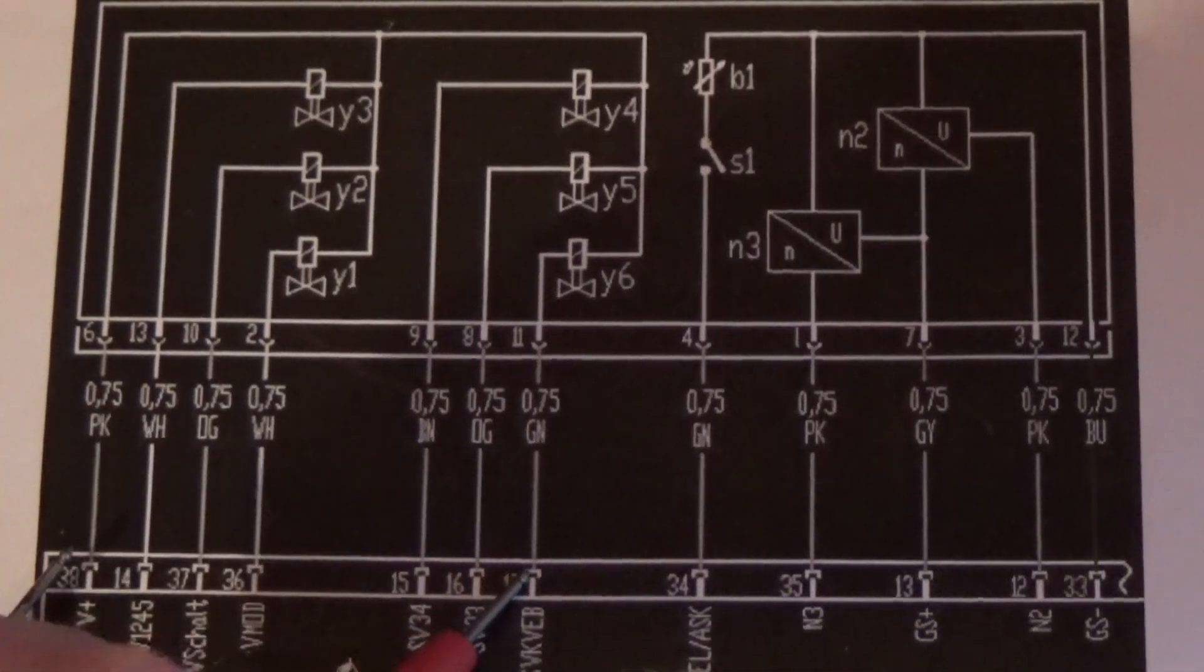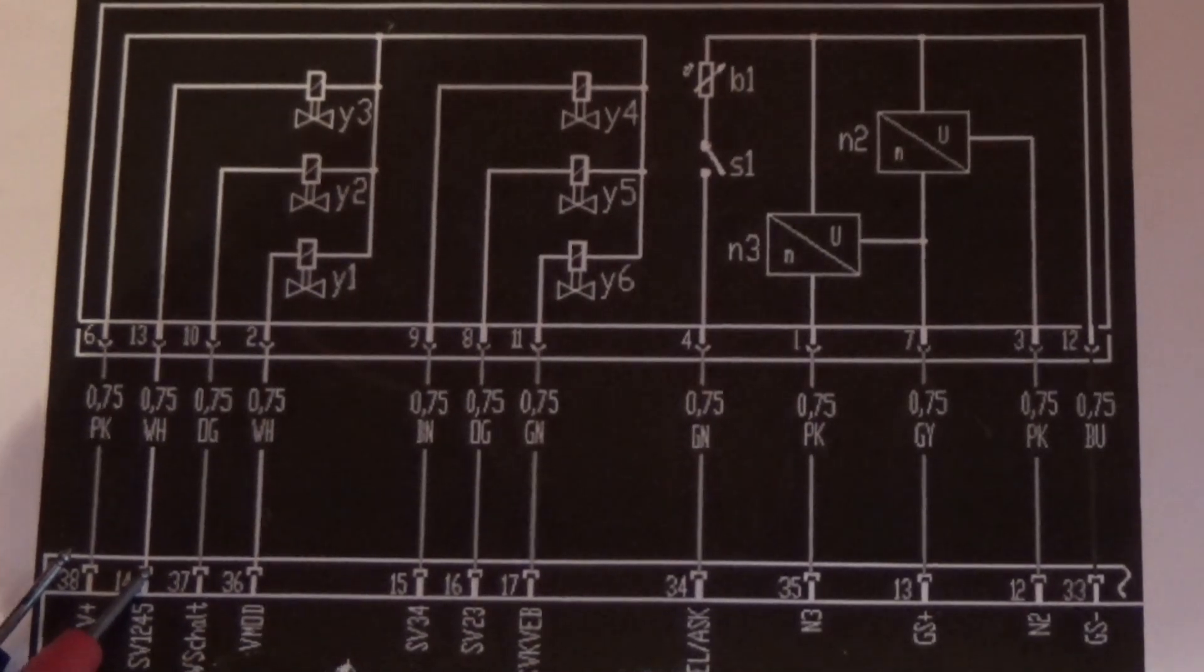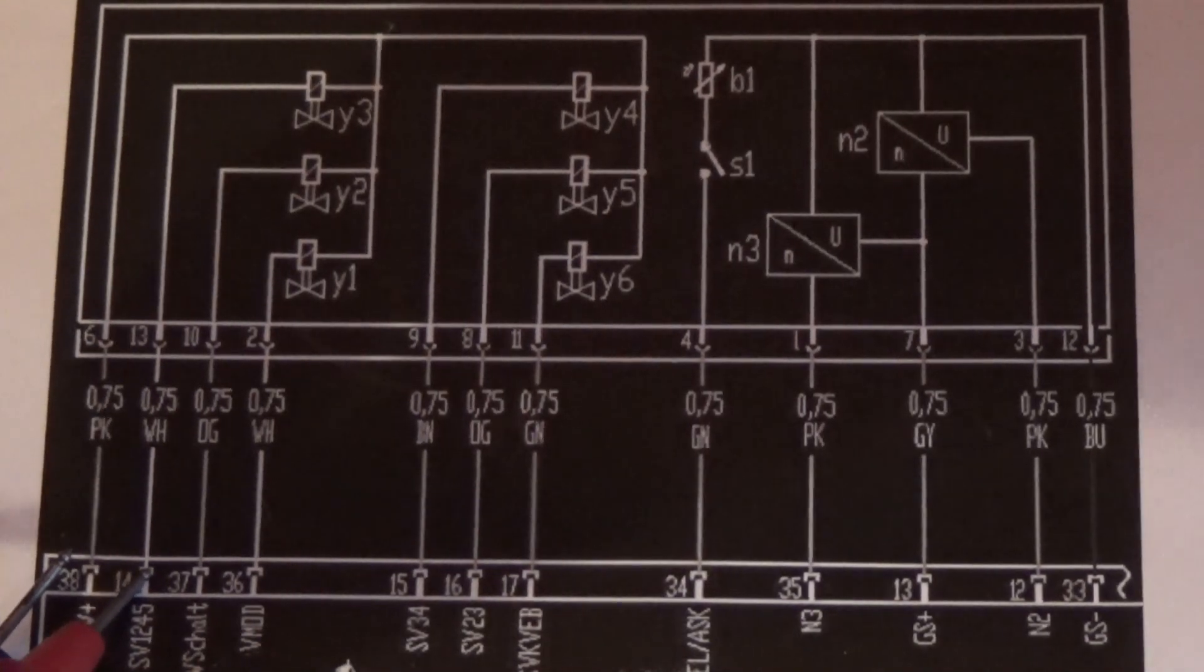And finally, pin 14 which is the 1 to 2 and the 4 to 5 shift solenoid. 4.5 ohms.